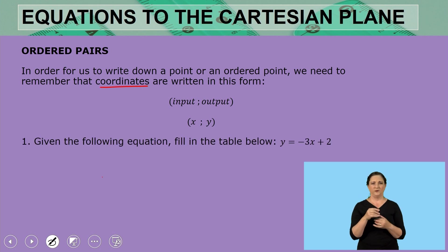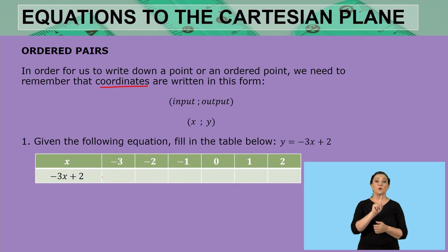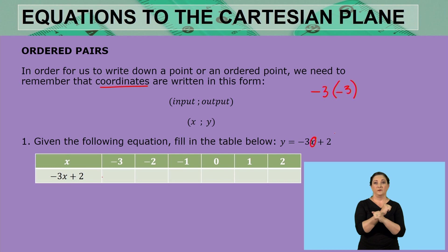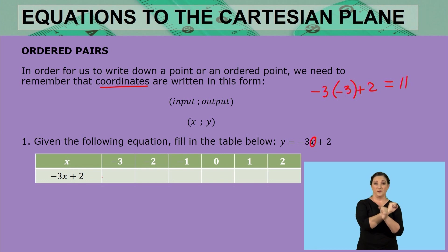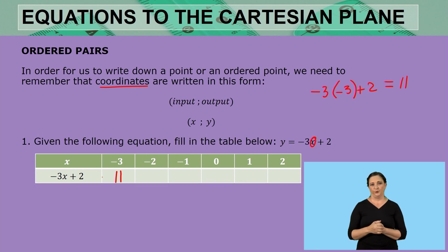Given the following equation, we fill in the table by substituting the input x values into the formula. The first input value is negative 3: negative 3 multiplied by negative 3 is positive 9, and adding 2 gives us positive 11. When the input is negative 2, the output is 8. When the input is negative 1, the output is 5.